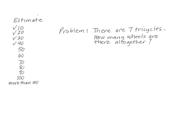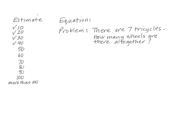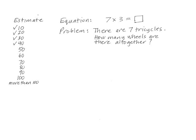I wrote 'problem' on the board, again to support the vocabulary, and told them that we'd see which estimate was closest when we figured out the answer. I then wrote 'equation' on the board and told them that before we worked on figuring out the answer, I was interested in writing the problem as a math equation. After a bit of back and forth with several students, I wrote the equation and talked about what the numbers meant — that there were seven tricycles and each had three wheels, so there were seven groups of three.